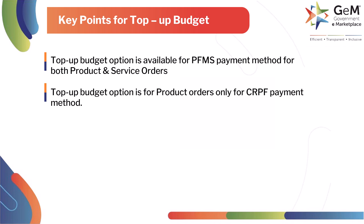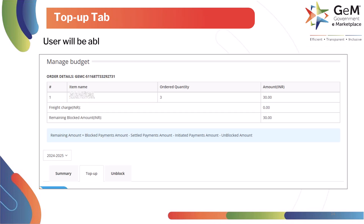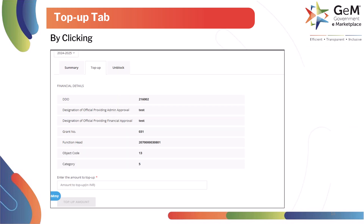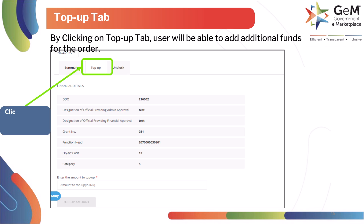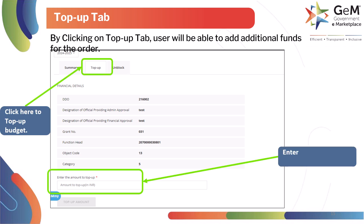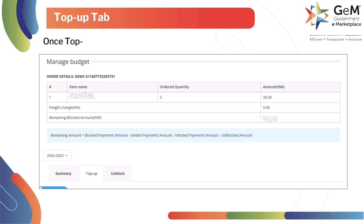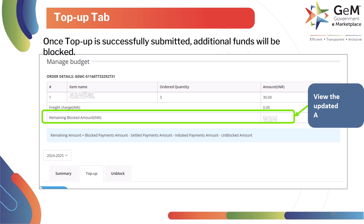The user will be able to view the remaining blocked amount. By clicking on the Top-up tab, the user will be able to add additional funds for the order. Click here to top-up budget and enter the amount to top-up. Click on top-up amount to complete the process. Once top-up is successfully submitted, additional funds will be blocked. View the updated amount here.